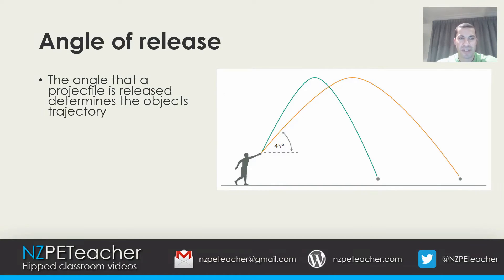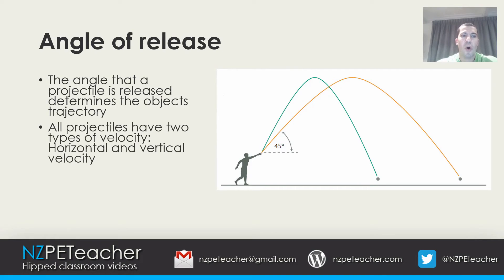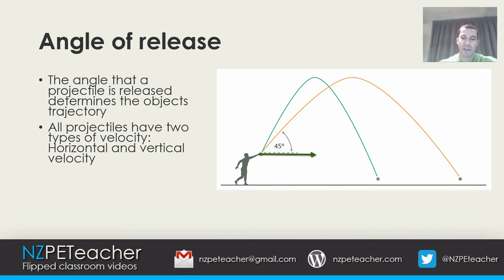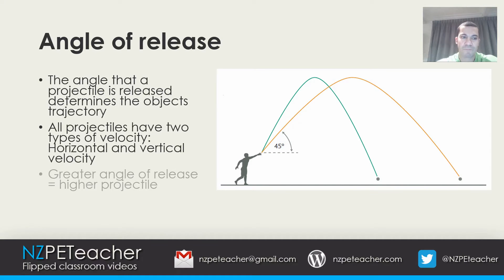The angle that a projectile is released determines the object's trajectory. All projectiles have two types of velocity: horizontal and vertical velocity. The combination of horizontal and vertical velocity results in a flight path in the shape of a parabolic curve.